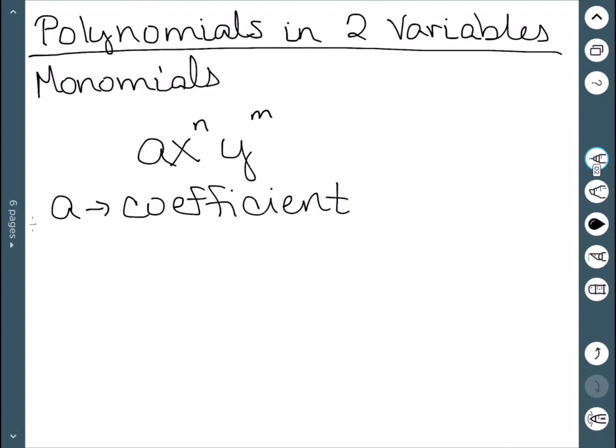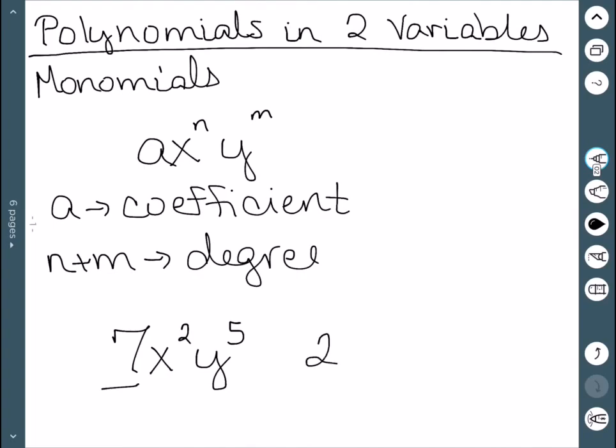And our degree this time is that we add our two exponents. So for example, if we had something like 7x squared y to the 5th, our coefficient would be this 7 and our degree would be 2 plus 5, which in this case is also 7.